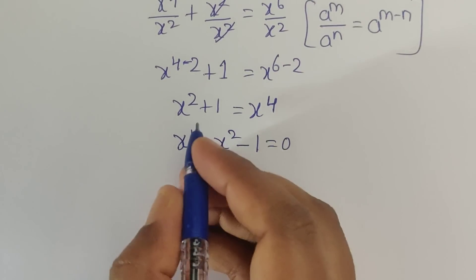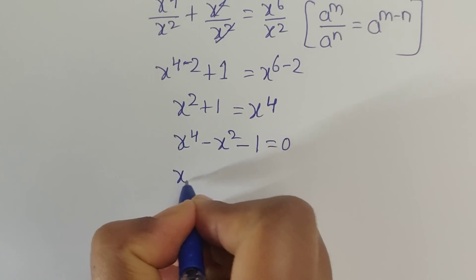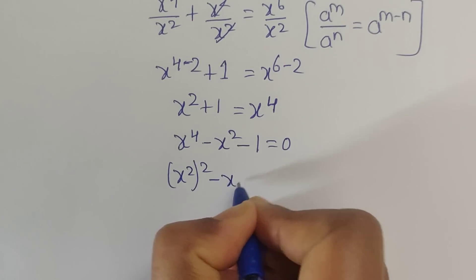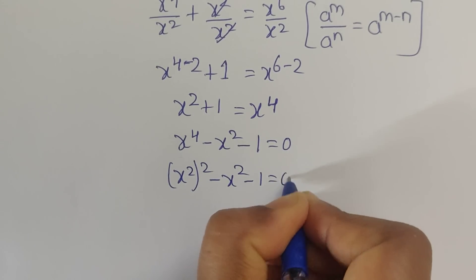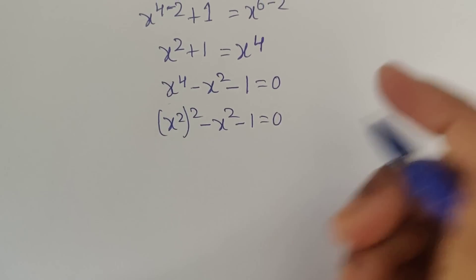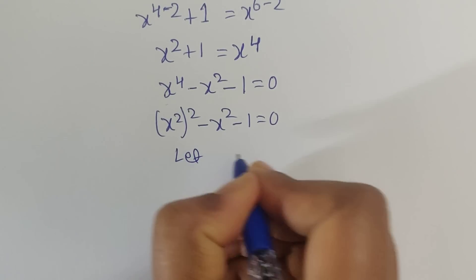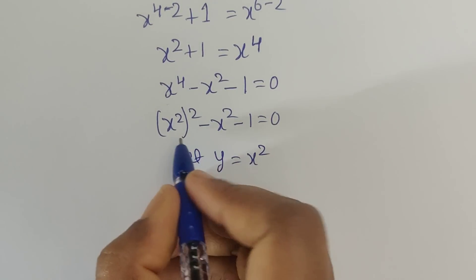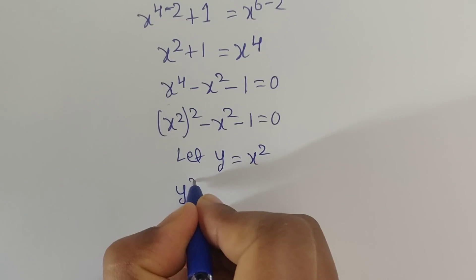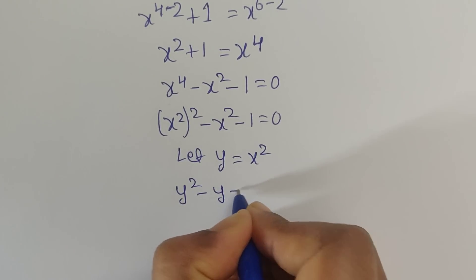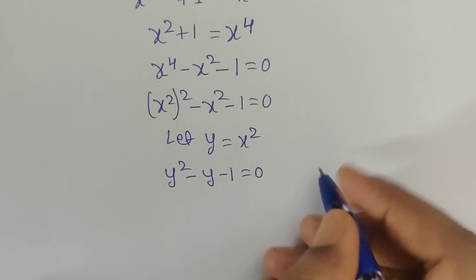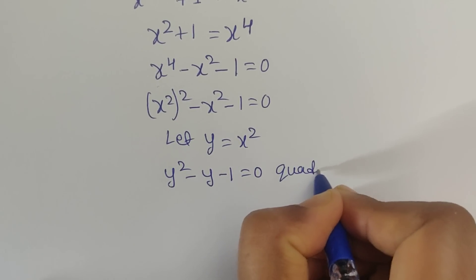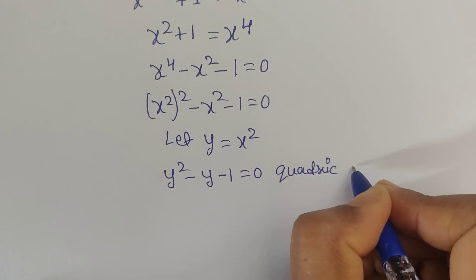Here, x to the power of 4 can be written as x squared, whole to the power of 2, minus x squared minus 1 equals 0. Now let us consider y equals x squared. Then we get y squared minus y minus 1 equals 0. This is a quadratic equation.